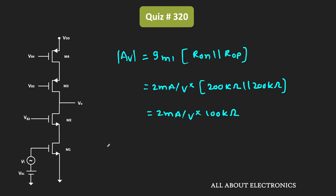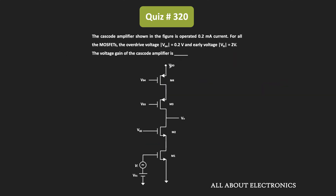That means the voltage gain of this cascode amplifier is equal to 200 V/V. So from this we can say that for the given cascode amplifier, the voltage gain is equal to 200 V/V.